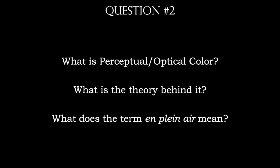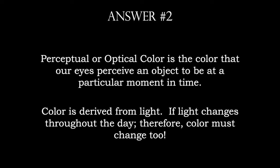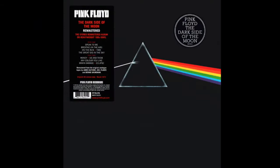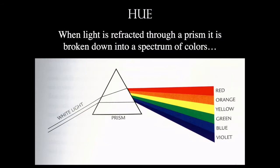Here we also include perceptual or optical color — the color an object is at any particular moment in time. We also think about the term en plein air. Perceptual or optical color is the color our eyes perceive an object to be at that particular moment. Color is derived from light, and light changes throughout the day, so color changes as well. In 1666, Sir Isaac Newton refracted light through a prism and found it emerges into six specific colors — the hues: red, orange, yellow, green, blue, and violet — also the primary and secondary colors.